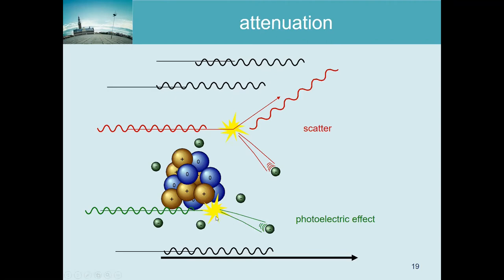Here are the two effects shown in a cartoon. We have a photon hitting a strongly bound electron, and the photon is completely absorbed - all its energy compensates for the binding energy, and the rest goes into kinetic energy of the electron. For us that means the photon is gone; we cannot measure it.